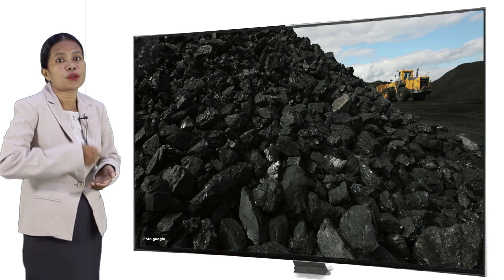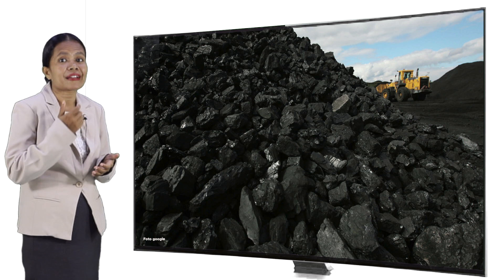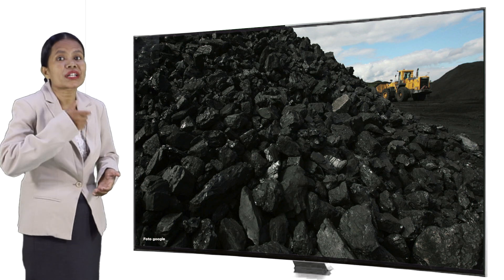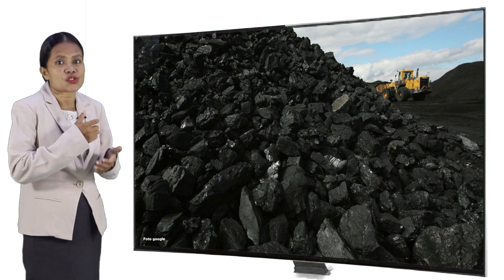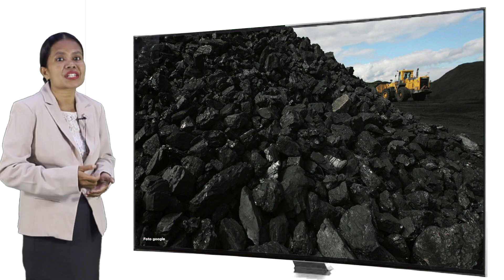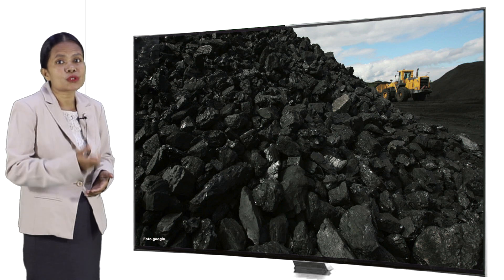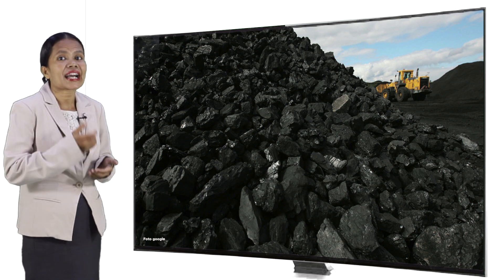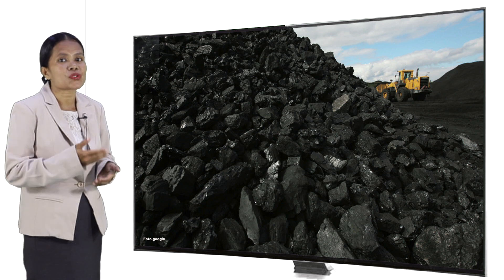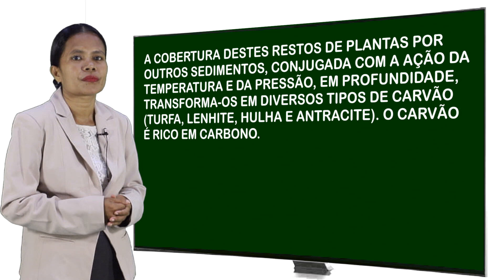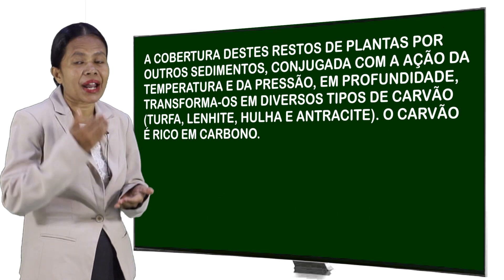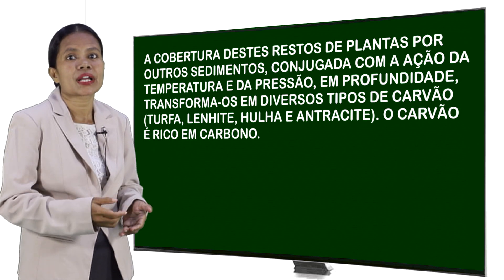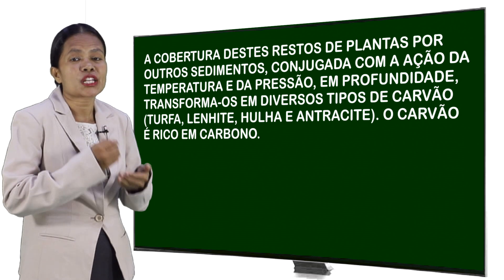O carvão é o combustível fóssil mais abundante na terra e formou-se principalmente em regiões com vegetação luxuriante ou regiões tropicais e subtropicais, em ambientes húmidos, sobretudo nos pântanos e em alguns lagos pouco profundos. Resultam da decomposição, em ambientes sem oxigênio, de restos de plantas que caíram em zonas alagadas, depositadas em várias camadas. A cobertura destes restos de plantas por outros sedimentos, conjugada com a ação da temperatura e da pressão em profundidade, transforma-os em diversos tipos de carvão.